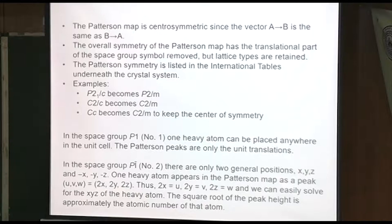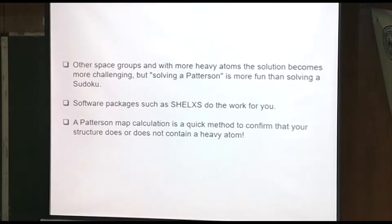Once you've done that, you can put it into your INS file, do a refinement, do a difference map calculation, and start finding the rest of the atoms. The Patterson map calculation is a quick method to confirm that your structure does or does not contain a heavy atom. A lot of times when you can't get a solution right away, it's because you've made an assumption that there is a heavy atom. If there's no heavy atom, it's a different story.